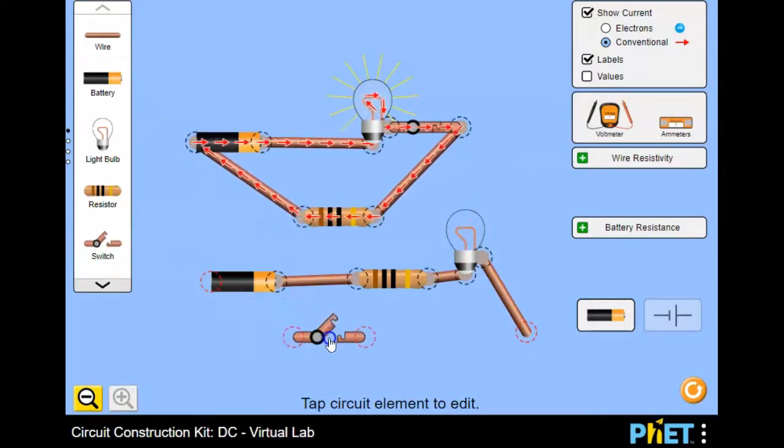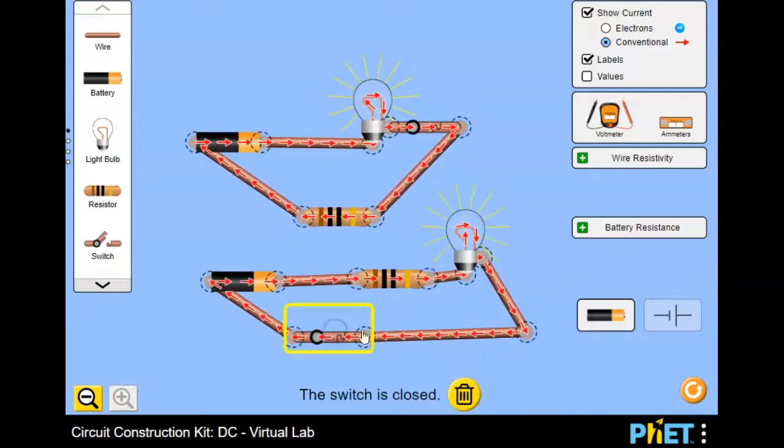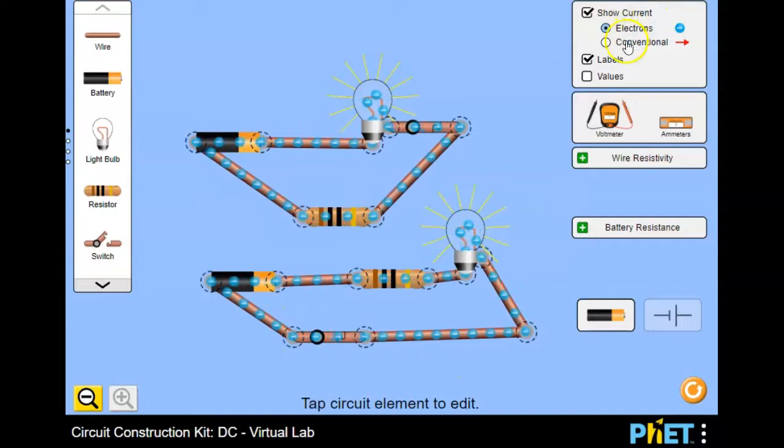You can put a switch in. So if I were to make just a basic series circuit and close it, you can see the electrons flowing. You can turn on conventional or electrons.